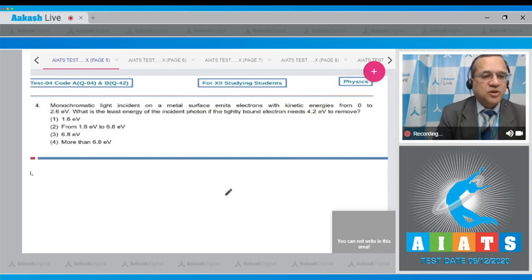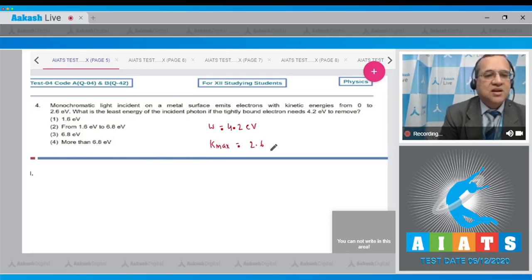Let's go to the fourth question: Monochromatic light incident on a metal surface emits electrons with kinetic energy from 0 to 2.6 electron volt. What is the least energy of the incident photon if the tightly bound electrons need 4.2 electron volt to remove? The work function is equal to 4.2 electron volt, and the maximum kinetic energy equals 2.6 electron volt. By Einstein's equation, the energy equals work function plus the maximum kinetic energy: 4.2 plus 2.6 equals 6.8 electron volt. Option number 3 is 6.8 electron volt, therefore answer is 3.